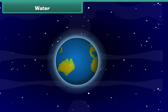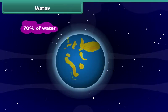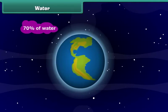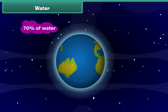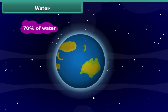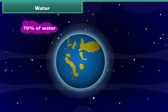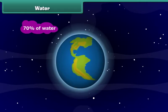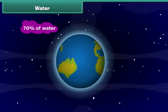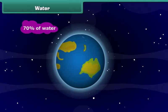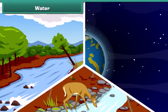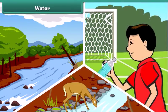About 70% of Earth's surface is covered by water. Water is also an important natural resource. It is necessary for the survival of plants, animals and human beings.